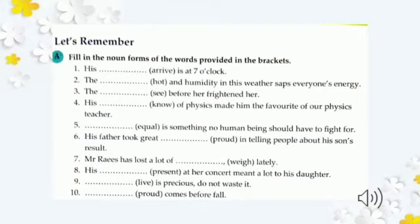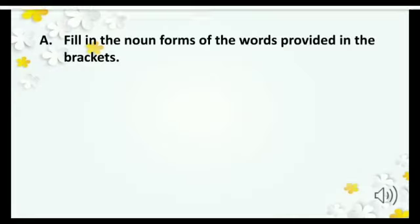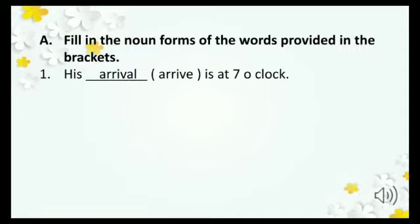Now we will do our first chapter exercise — Exercise A. We will do this with translation in our grammar copies. The question is: fill in the noun forms of the words provided in the brackets. Number one: 'His dash is at seven o'clock.'